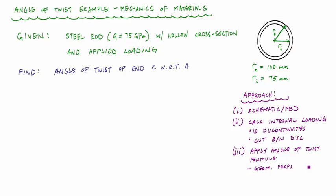What's up, everyone? Welcome back to Structure Free Learning. In this video, we're going to do an example problem on angle of twist. In this problem, we've got a steel rod with a shear modulus of elasticity of 75 gigapascals and a hollow cross-section and applied loading. This problem is a little bit more challenging because the loading has a linearly distributed load, and what we want to do is find the angle of twist of C with respect to A.